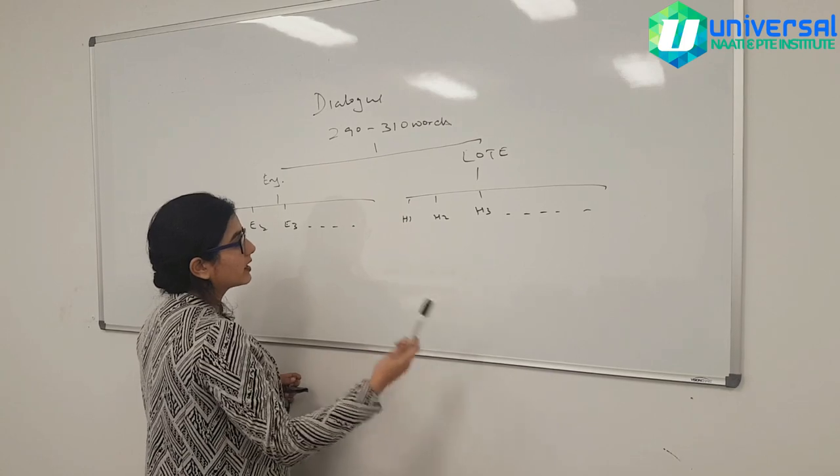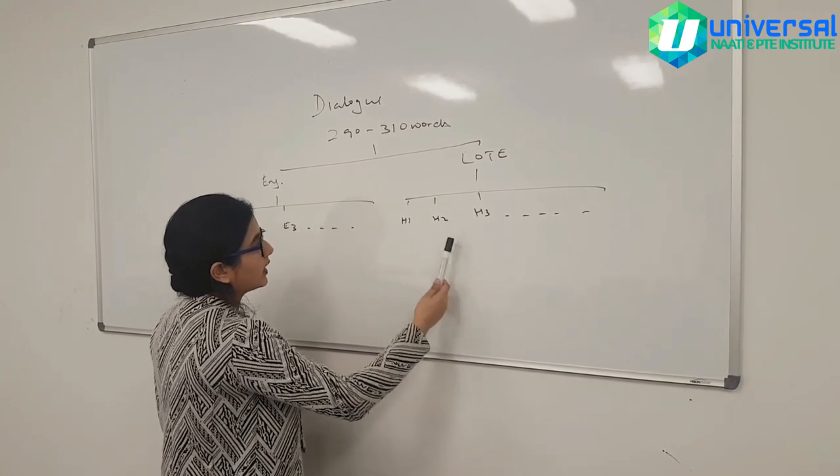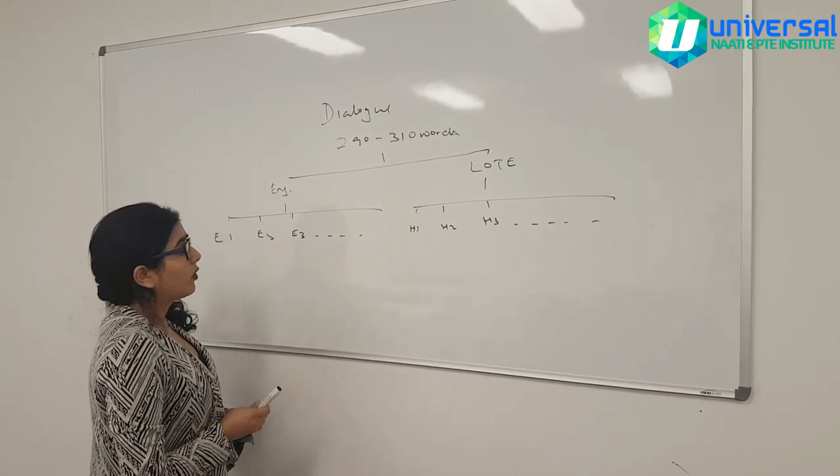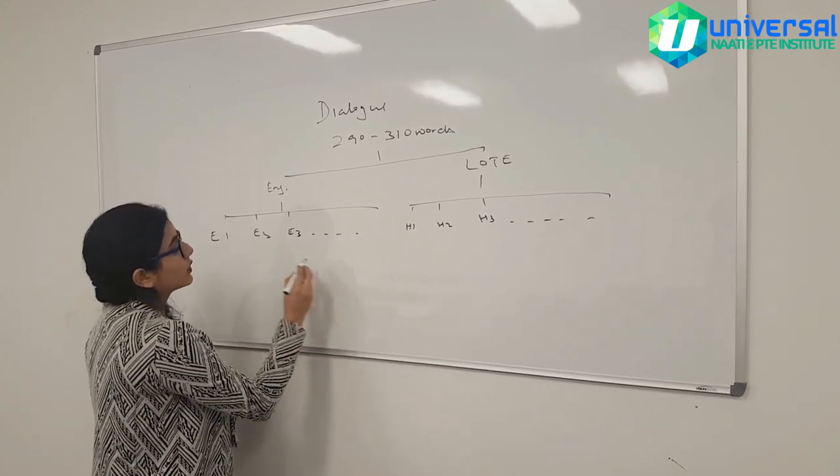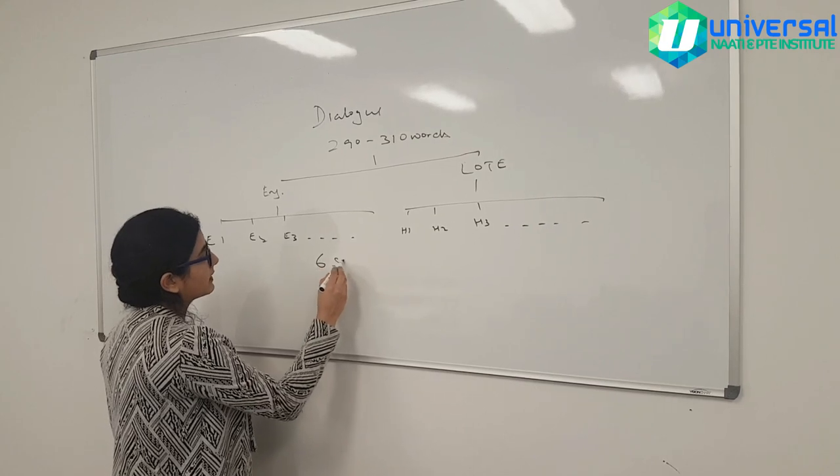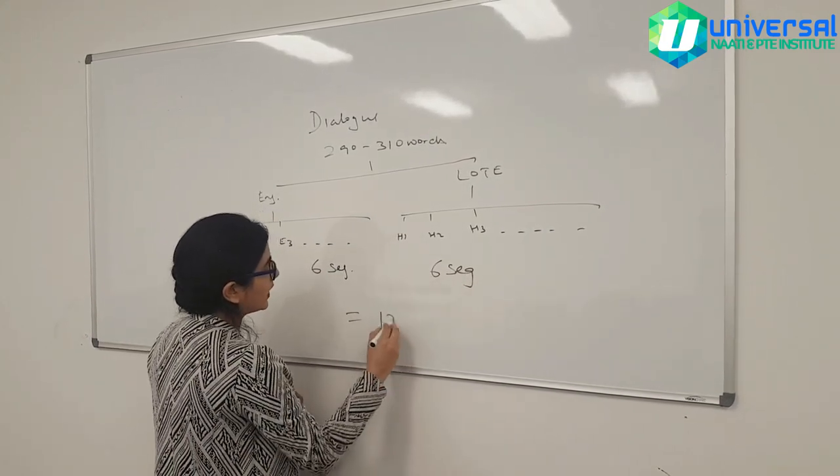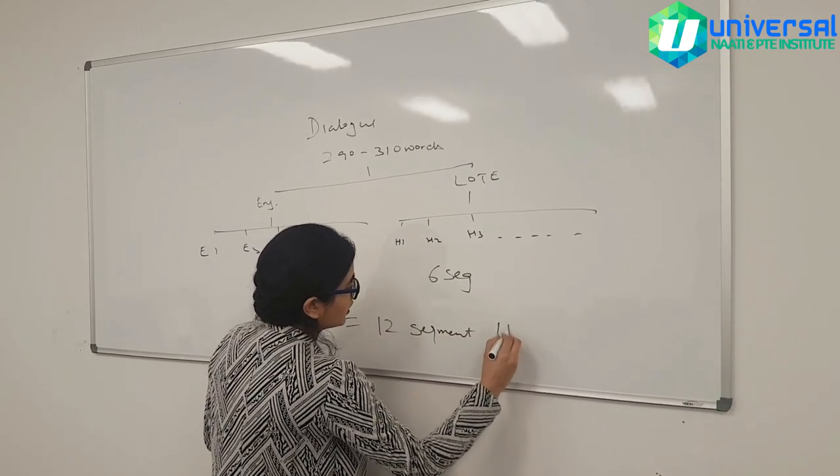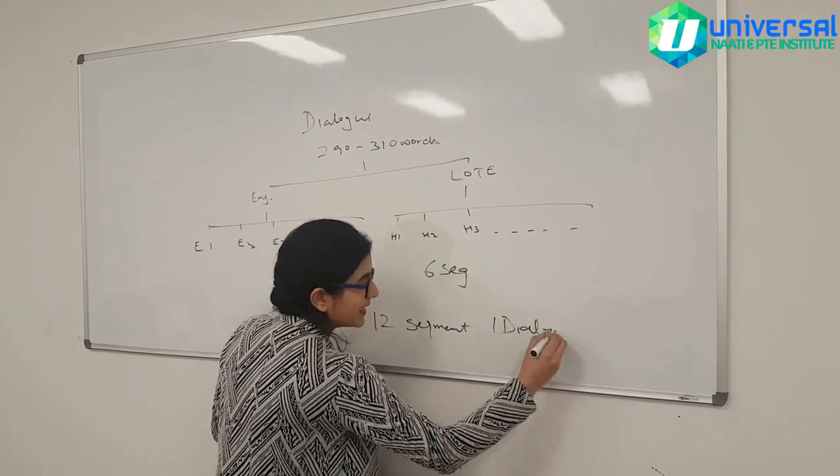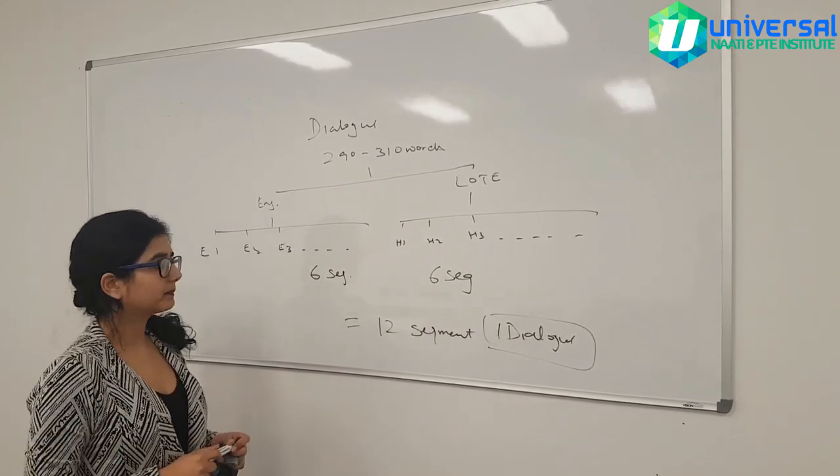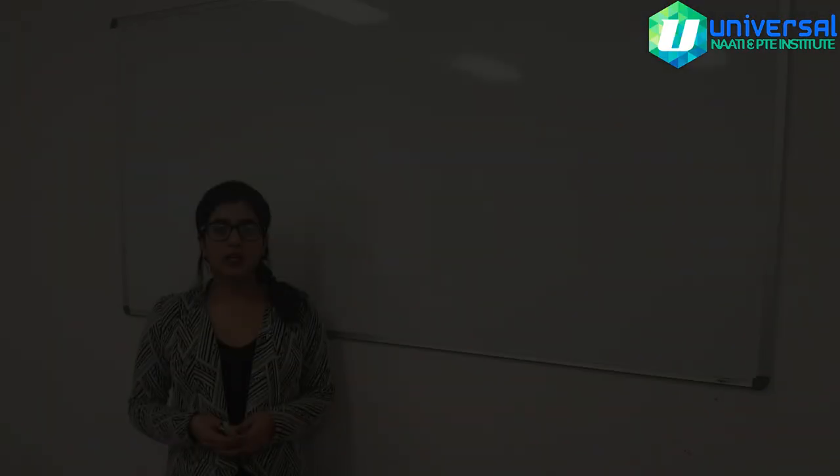If you can see E1, E2, E3 and so on, and then in the other language there are segments H1, H2, H3 - I've just noted there as in Hindi language. So basically all together most of the times it's six segments in each direction, so you're looking at 12 segments in one dialogue. In an exam you're basically working on 24 segments altogether.